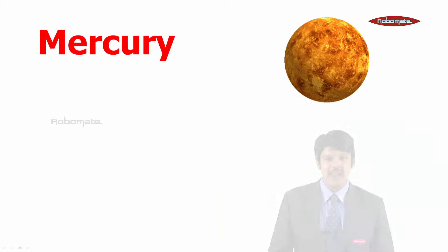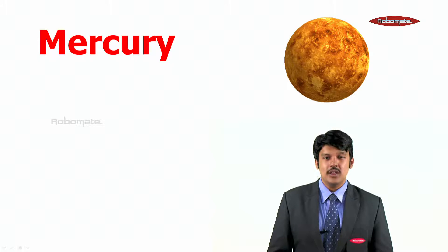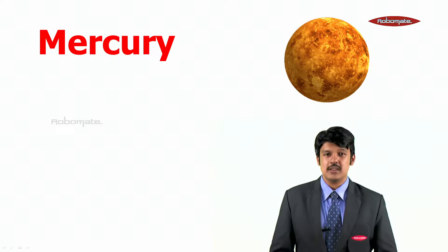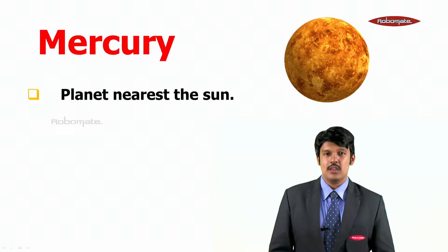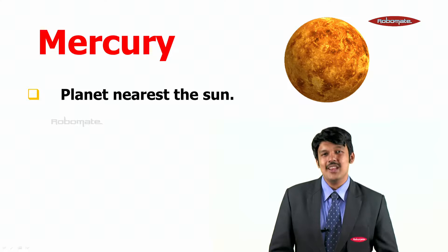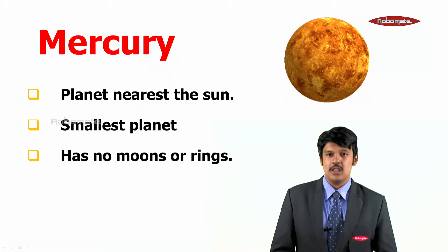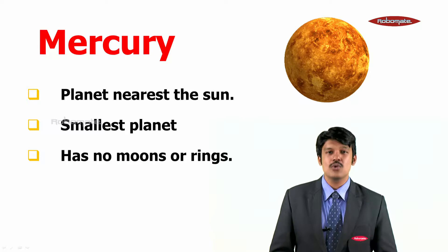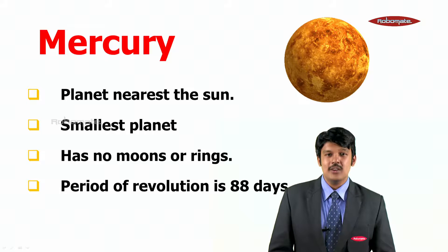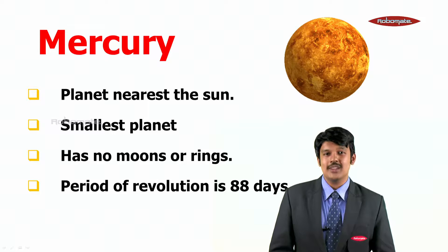Now, let us understand in detail about the first planet, Mercury. Mercury is the planet nearest to the sun. It is the smallest planet among all the planets and has no moons or rings around it. Its period of revolution is 88 days — it completes one revolution in 88 days.